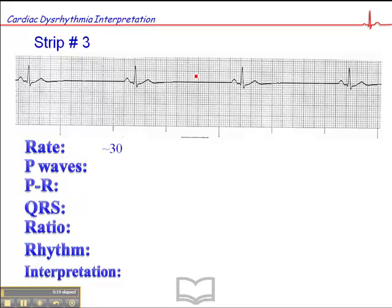We'll do a manual calculation here. So here's a QRS that falls on a dark line. So the heart rate is 300, 150, 100, 75, 60.